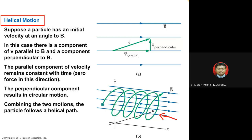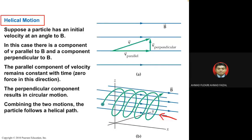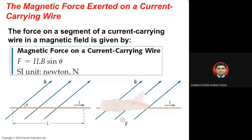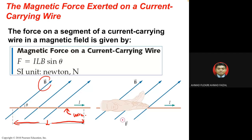Next we look at the magnetic force on a current-carrying wire. A wire carrying current has its own length and is placed inside a magnetic field B. This results in a magnetic force on the current-carrying wire.